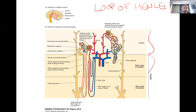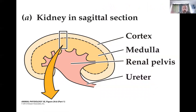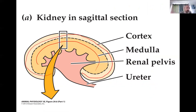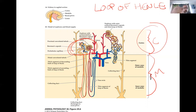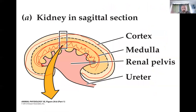The kidney is divided into two units: the cortex and the medulla. The cortex is the outer layer and the medulla is the middle layer within it. Our PCT, DCT, glomerulus, and Bowman's capsule all live in the cortex. But the loop of Henle descends down into the medulla. So the larger the medulla, the longer the loop of Henle, and the more concentrated our urine can become.